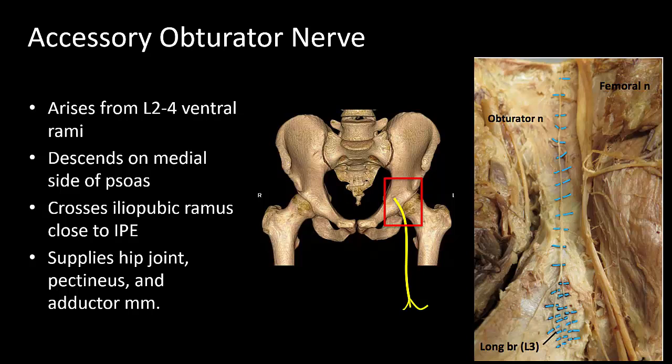The third nerve is the accessory obturator nerve, which similarly descends along the medial side of the psoas muscle, but runs more superficially to cross the iliopubic ramus close to the iliopubic eminence.